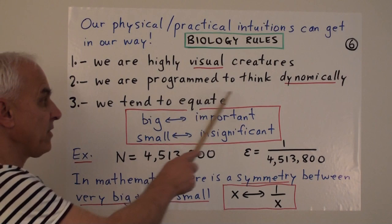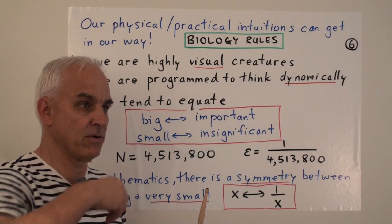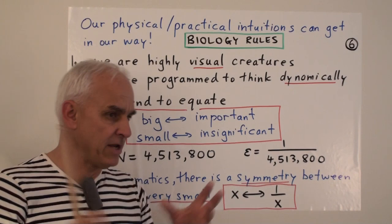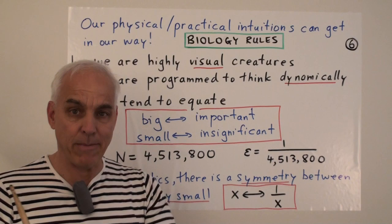We are programmed to think dynamically. We live in a world of movement. And we think about cause and effect. About time going on and things moving around. So it's very natural for us to try to frame our mathematics in terms of something moving or something dynamic. It's what we are.